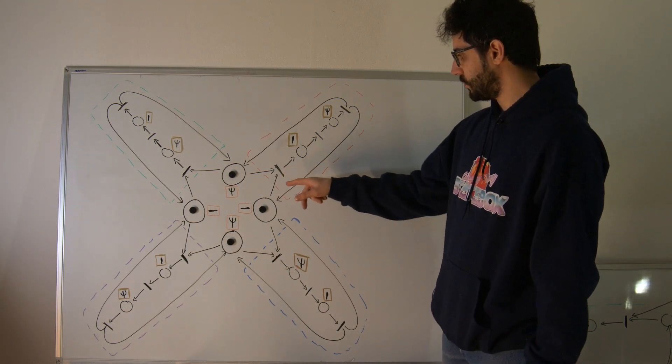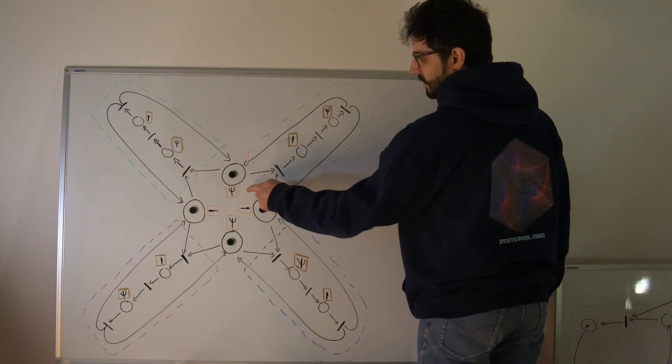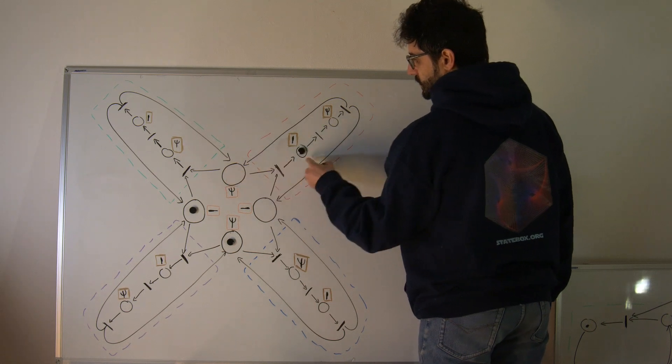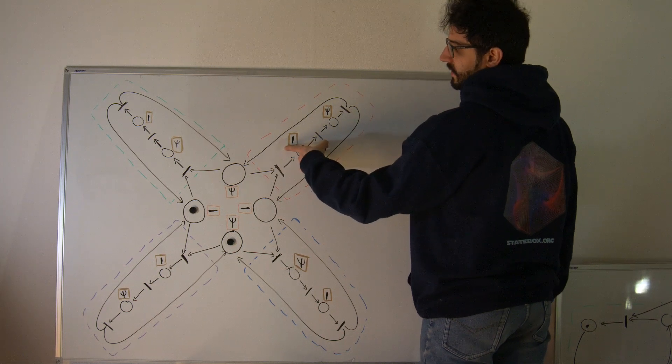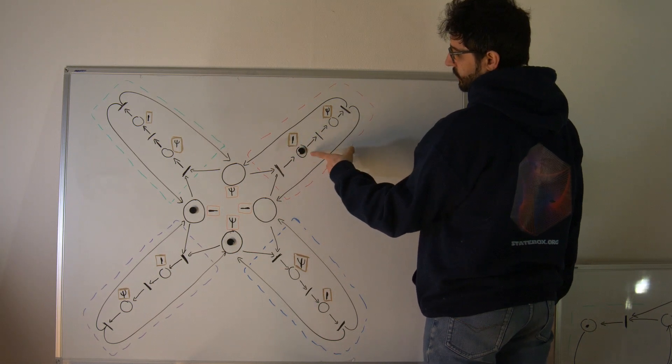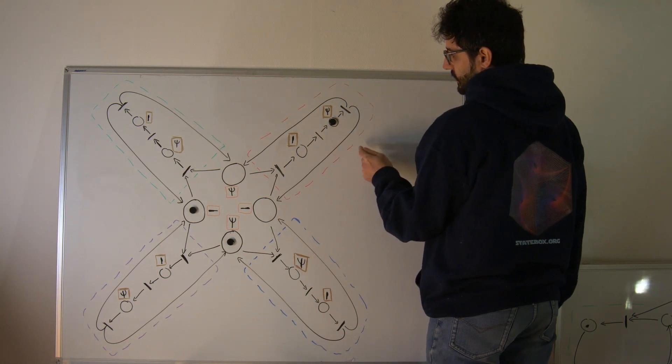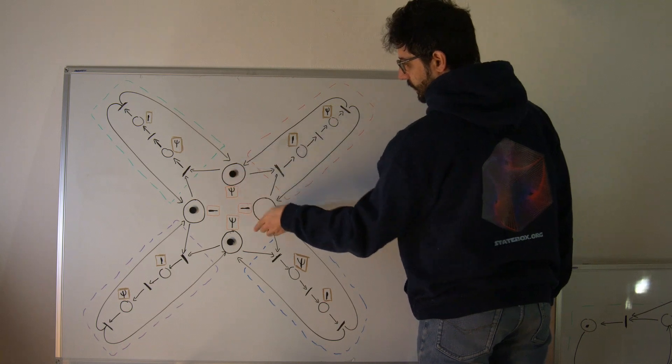So if, for instance, red wants to eat, what happens is that red reserves both the fork and the knife, obtaining a token here that represents the fact that now red has taken the knife out of the table, then red takes the fork out of the table and after this red eats and the two tokens are put back in place.